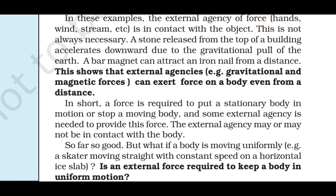In these examples, the external agency of force is in contact with the body. This is not always necessary. A stone released from the top of a building accelerates downwards due to gravitational pull of the earth. A bar magnet can attract an iron nail from a distance. This shows that external agencies, e.g. gravitational and magnetic forces, can exert force on a body even from a distance. In short, a force is required to put a stationary body in motion or stop a moving body, and some external agency is required to provide this force. The external agency may or may not be in contact with the body.